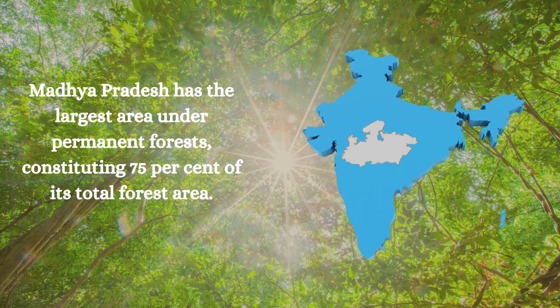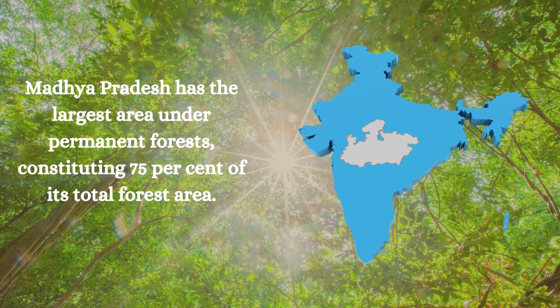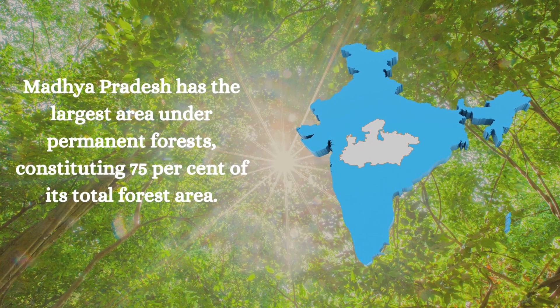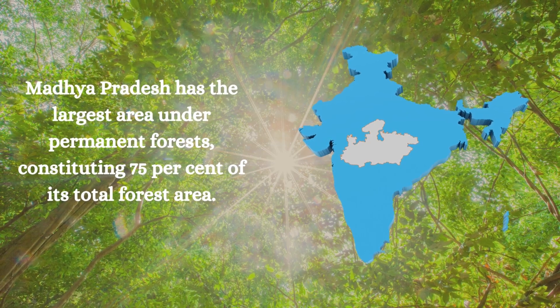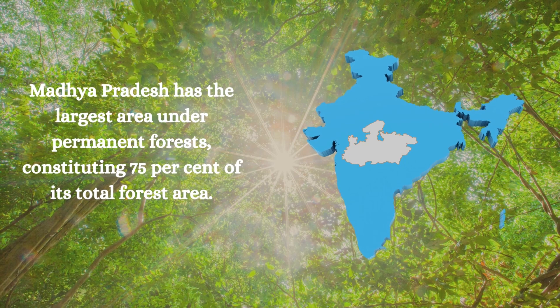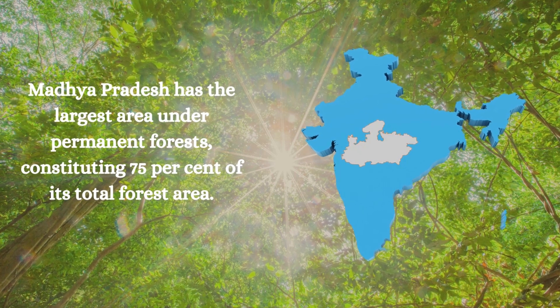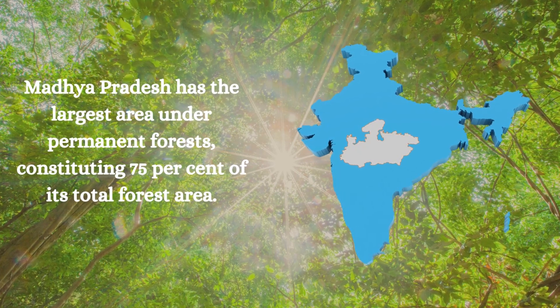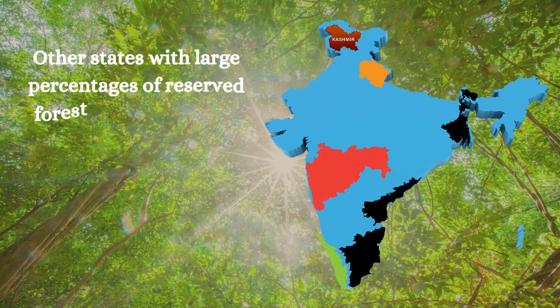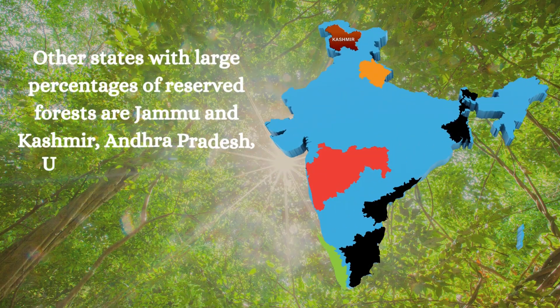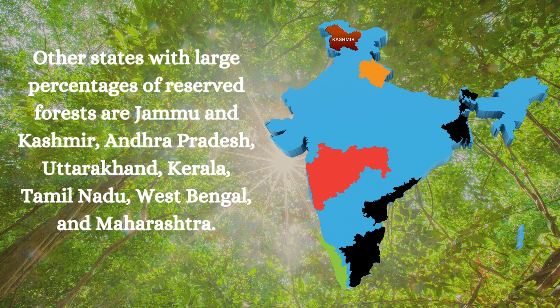Madhya Pradesh has the largest area under permanent forest, constituting 75% of its total forest area. The states with the largest reserve forests include Jammu and Kashmir, Andhra Pradesh, Uttarakhand, Kerala, Tamil Nadu, West Bengal, and Maharashtra.